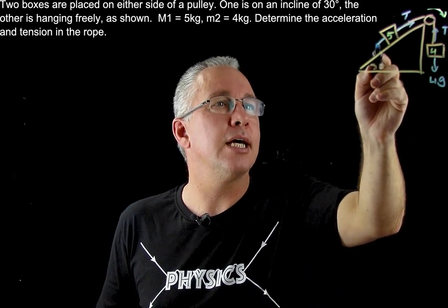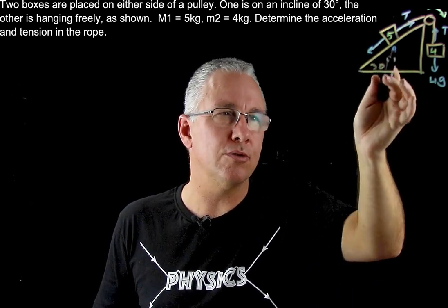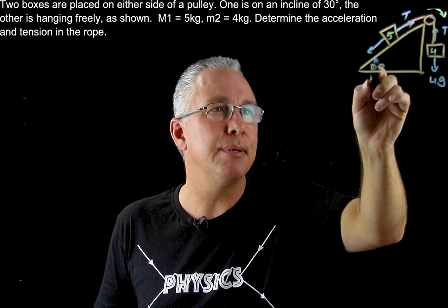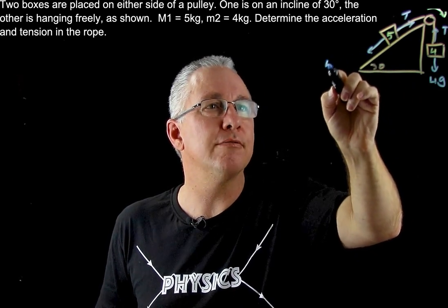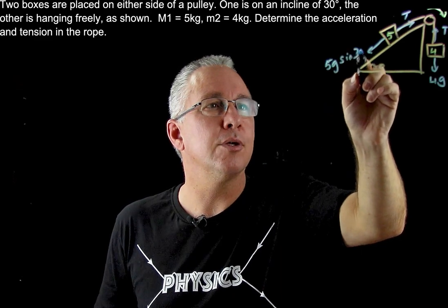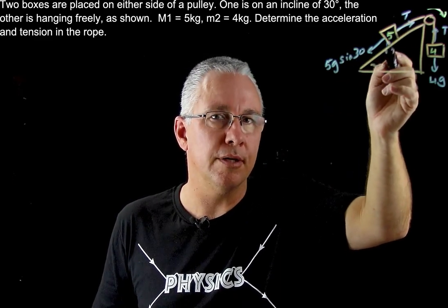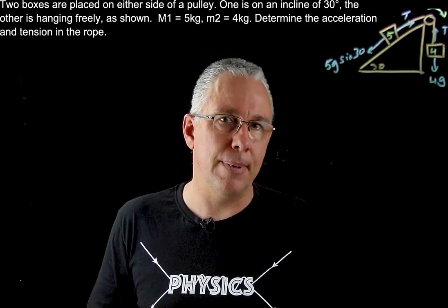Finally we also have a force down the plane which I won't go into how to resolve, but this ends up being equal to 5g sine 30 because that is the component of the force that is going along the plane.